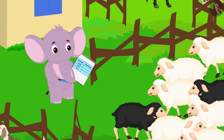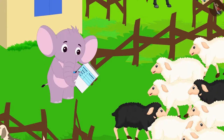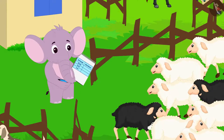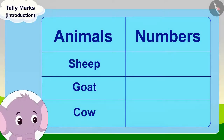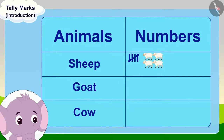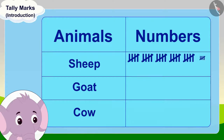Appu started counting his sheep again according to what Bunny had said. He counted five sheep and drew tally marks. Then for the next five sheep, he drew tally marks again. In this way, Appu finished counting all his sheep.